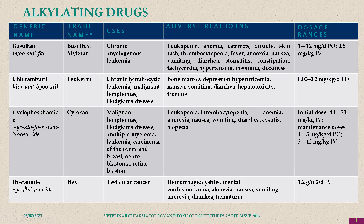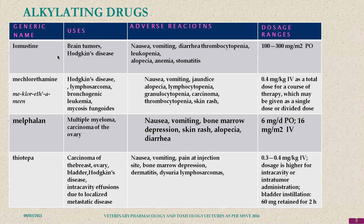Ifosfamide is a specific drug for testicular cancer; hemorrhagic cystitis is among its side effects. Lomustine is used for brain tumors; characteristically it passes the blood-brain barrier. Adverse reactions include vomiting, which is very common, as well as alopecia, anemia, and dermatitis — all very common in anti-cancer drug treatment.